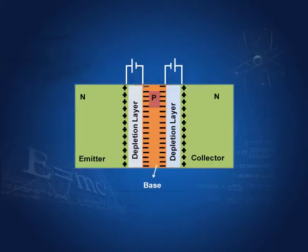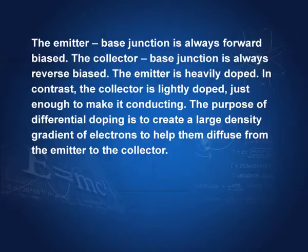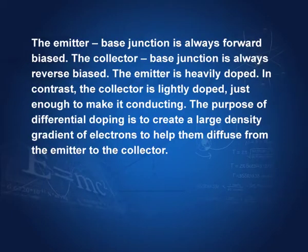The emitter-base junction is always forward biased, and the collector-base junction is always reverse biased. The emitter is heavily doped; in contrast, the collector is lightly doped just enough to make it conducting. The purpose of differential doping is to create a large density gradient, so that electrons can flow from higher density to lower density — diffusing from the emitter to the collector.